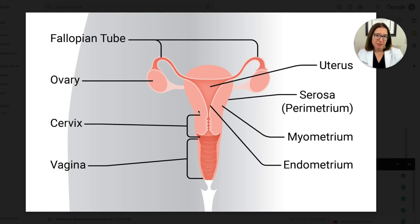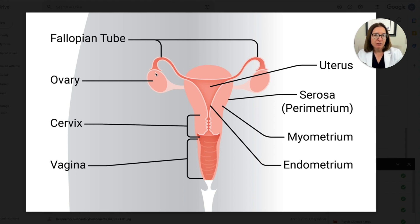Starting with the female reproductive system, we have two ovaries, one on either side. This is the site of egg production and is also the organ that produces sex hormones, which include estrogen and progesterone. We also have fallopian tubes on either side, which allow for passage of the oocytes from the ovary into the uterine cavity. The uterus is made up of the body — the corpus — as well as the uterine cervix, which is the conduit between the uterine cavity and the vagina.